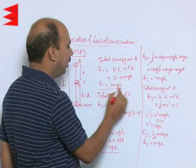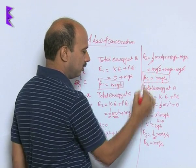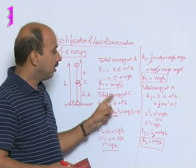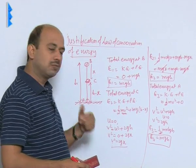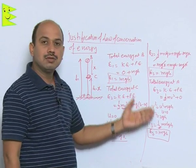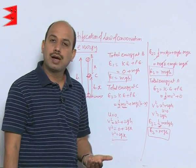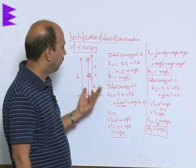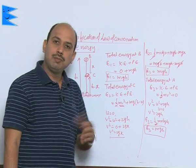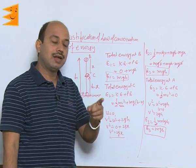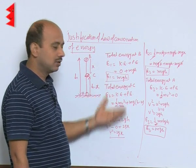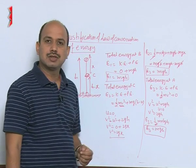So E1, E2, and E3 are the total energies at points B, C, and A respectively. If you look at all three equations, you will find the total energy remains the same. Energy is getting converted from kinetic to potential and potential to kinetic as the object comes down, but the sum of the total energy at every point remains the same. So we can justify the law of conservation of energy using this example of gravitational potential energy.